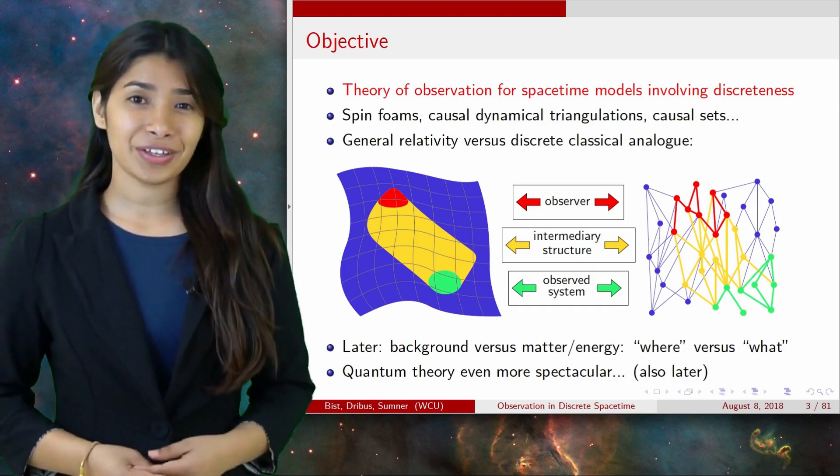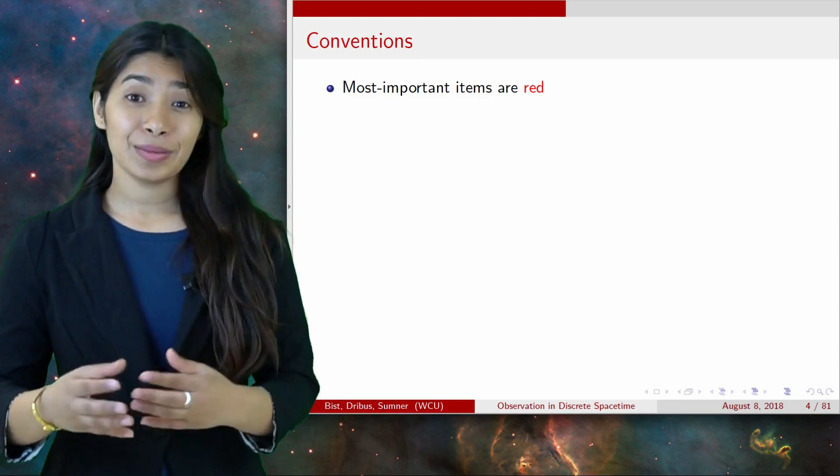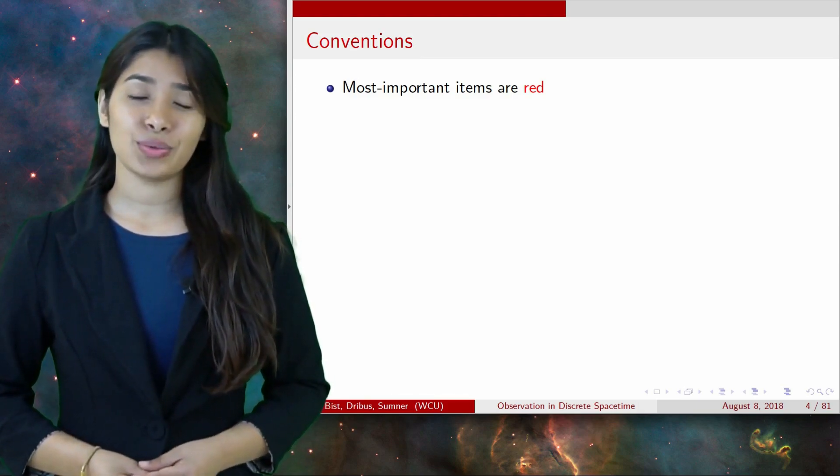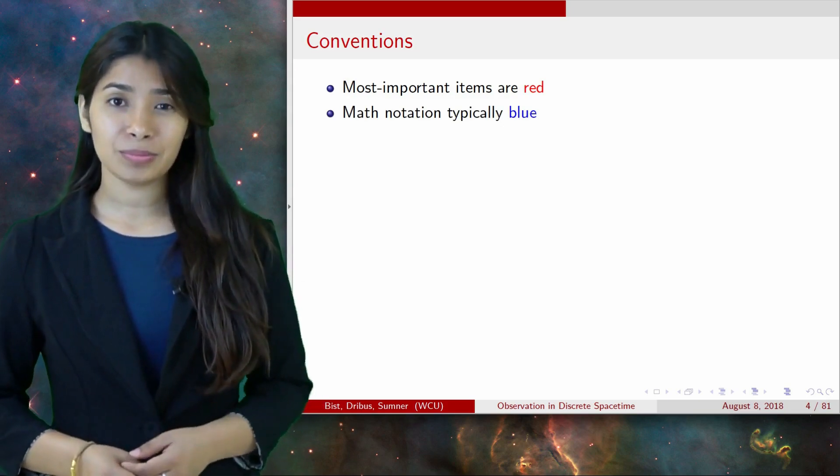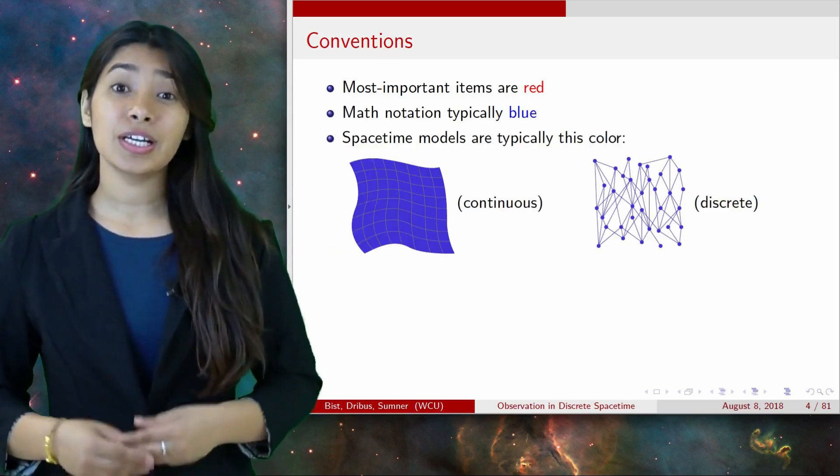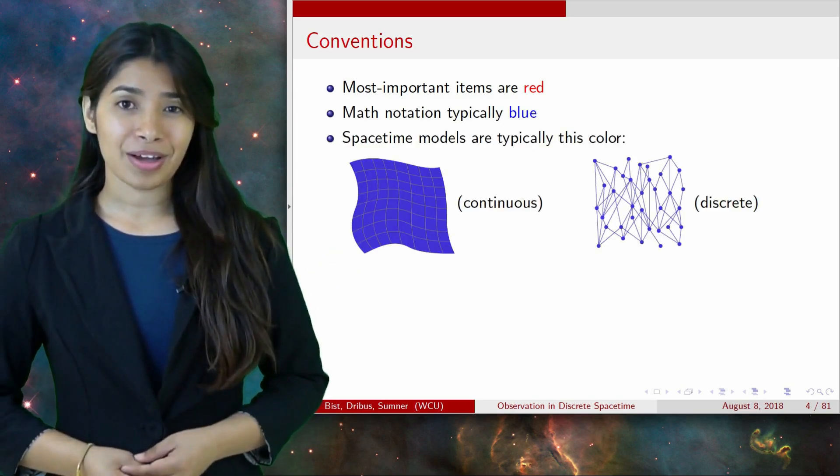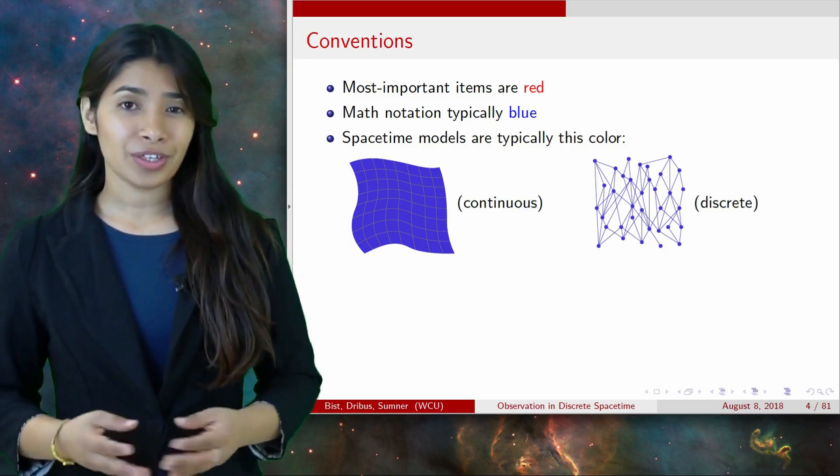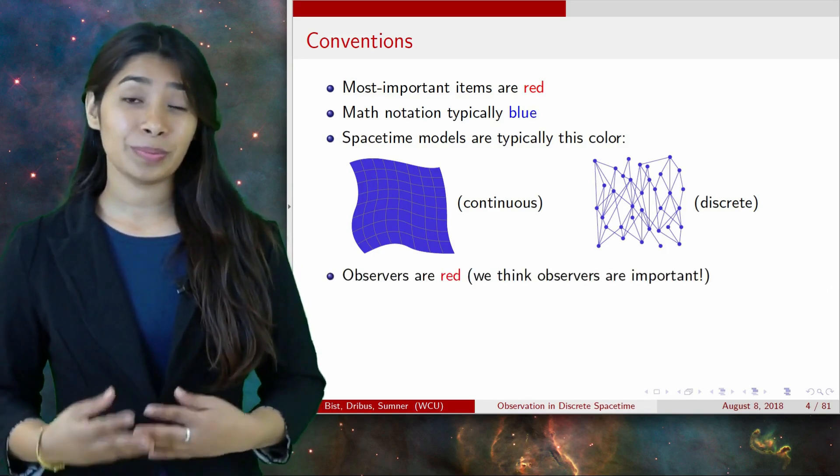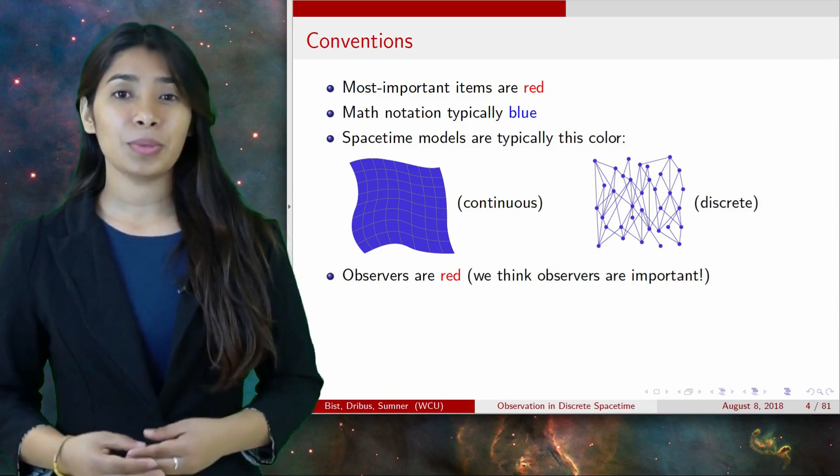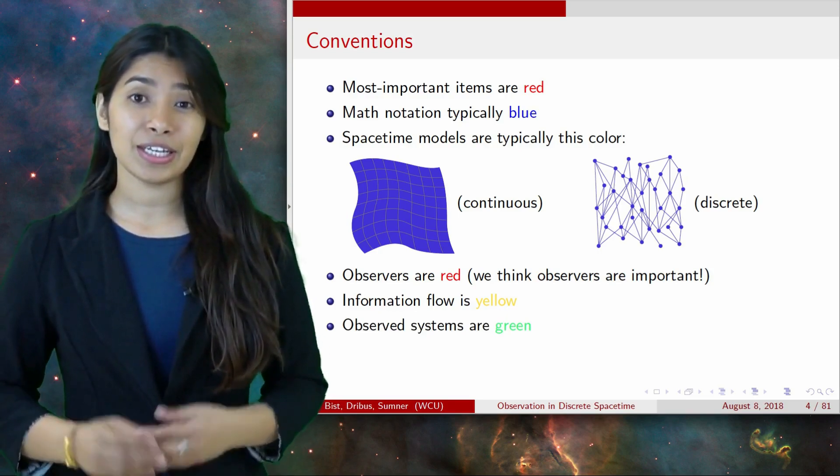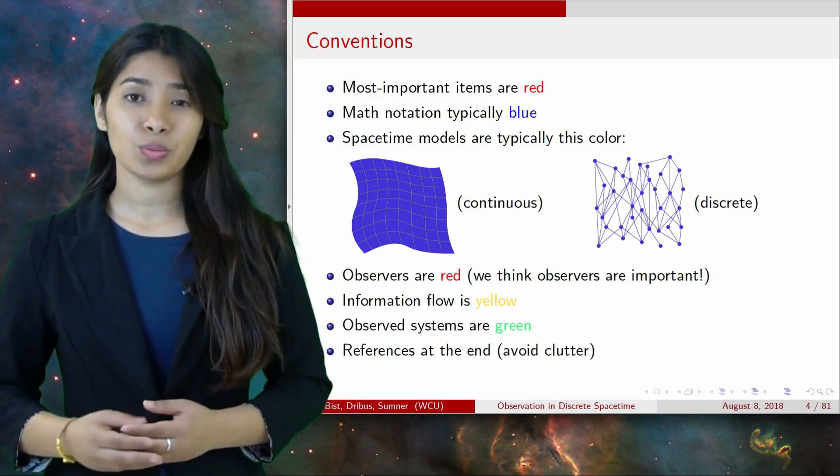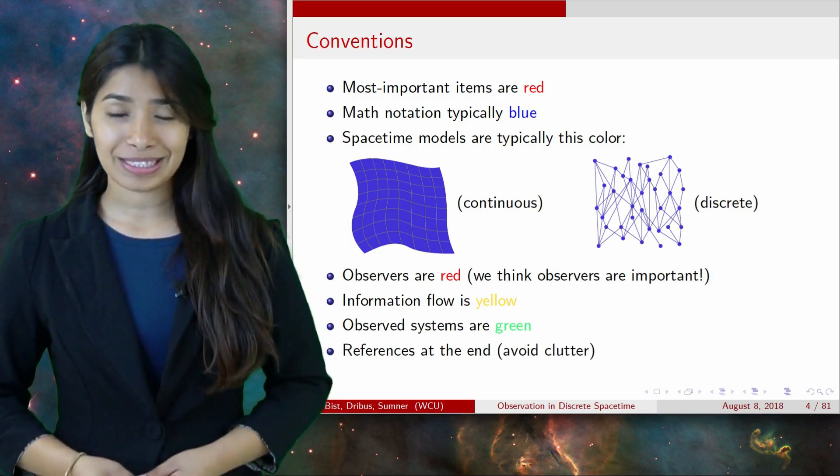Here are some of our conventions that we will be using throughout our slide. The most important items will be highlighted as red. The math notation will be highlighted as blue. We will be using darker blue color that you can see right here to represent space-time models. The observer, which are a very important part of our presentation, will be highlighted as red. The information flow will be yellow. And the observer system will be green. All the references are at the end. It will be easy enough to associate which reference is relevant to which slide.